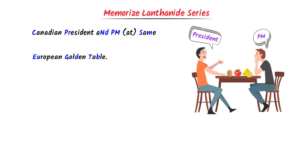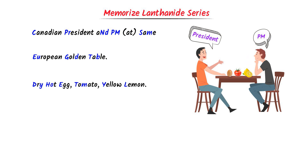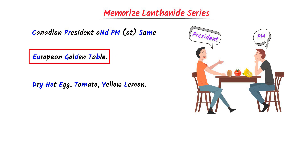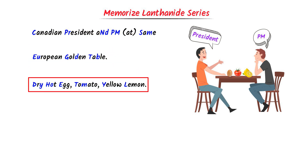Secondly, on the table there are eggs, tomato, and lemon. I say: dry hot egg, tomato, yellow lemon. So the full mnemonic is: Canadian President and PM at same European golden table, dry hot egg, tomato, yellow lemon.